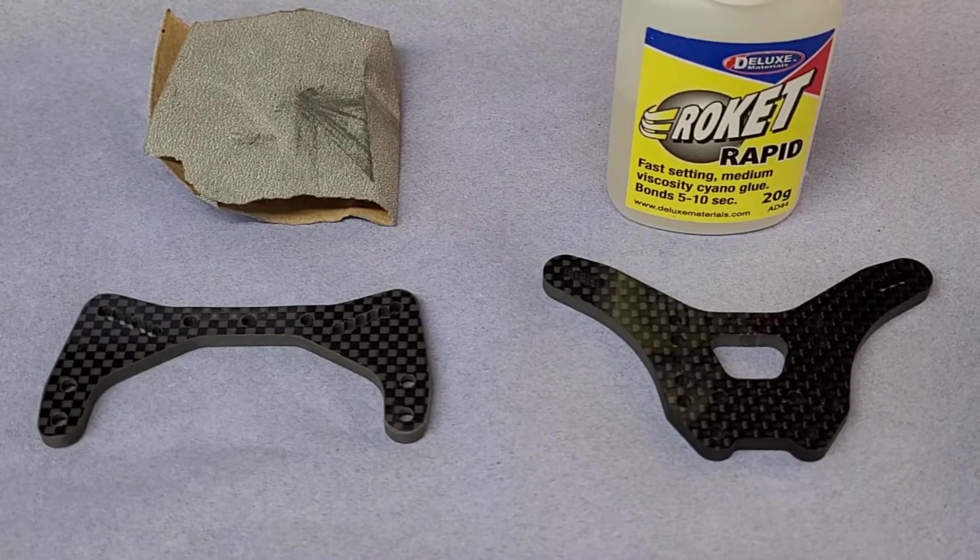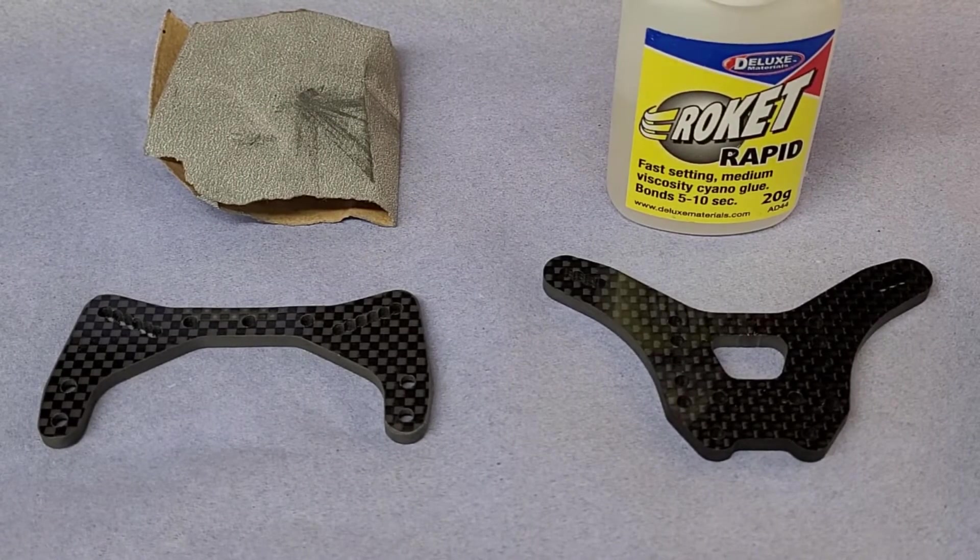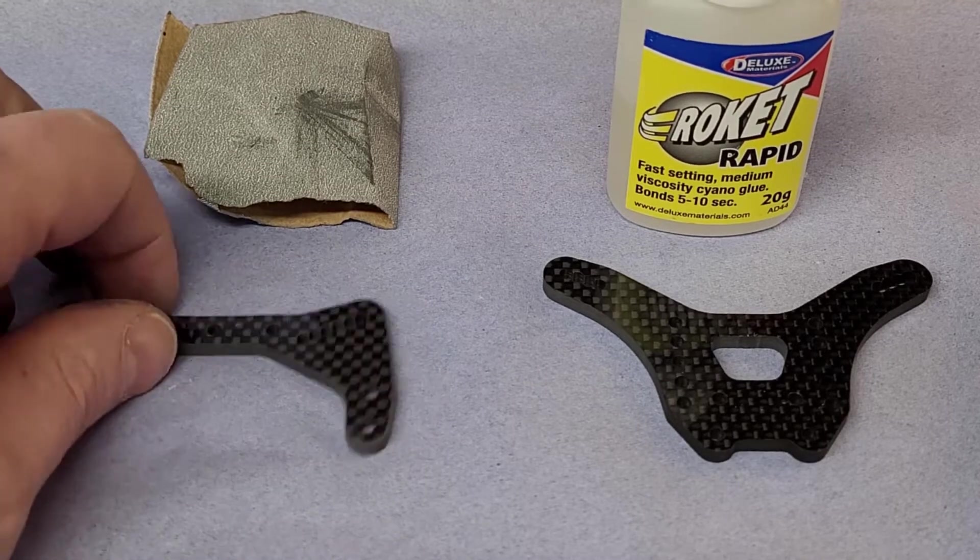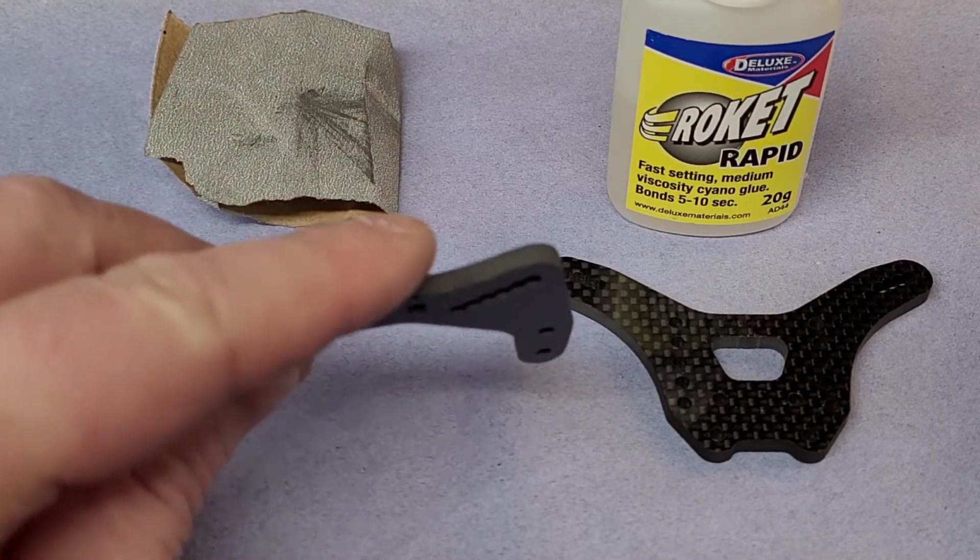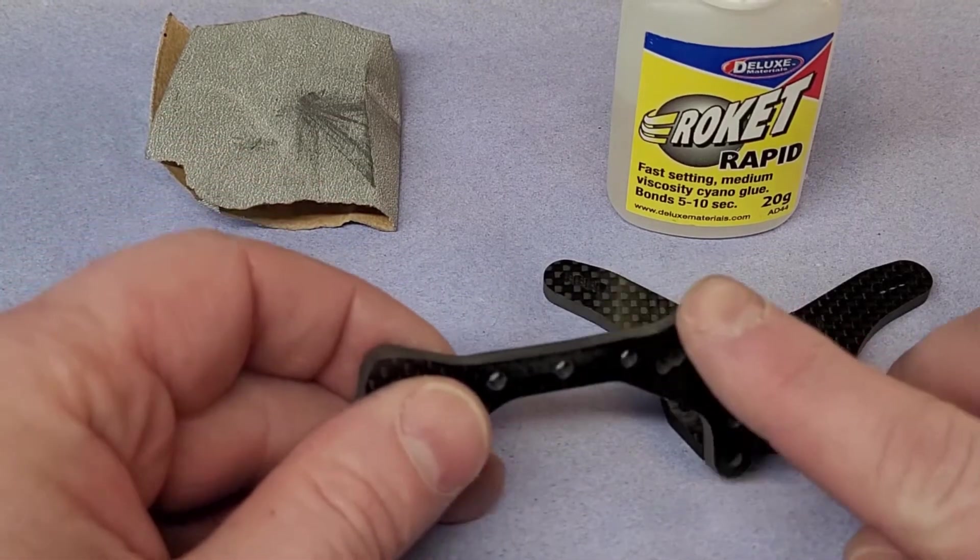Hi guys, Team RC3DPrints, and in this video we're going to talk about sealing carbon fiber pieces with super glue. Basically, it stops them delaminating.